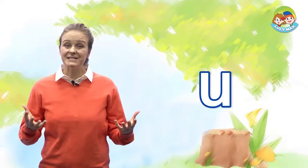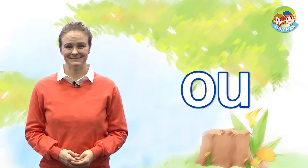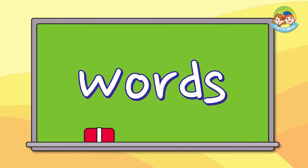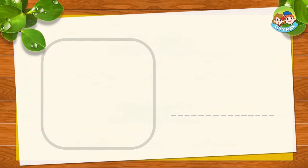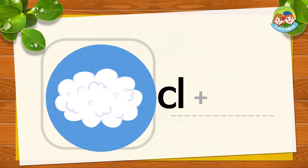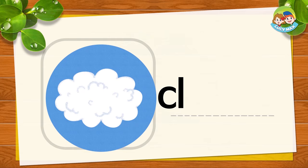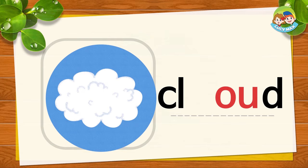The first OW sound is O with U. Let's see some words with the OW sound. The first picture is cloud. CL, OW, and D together is cloud. CL, OW, cloud.